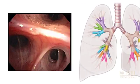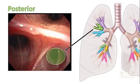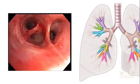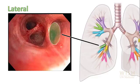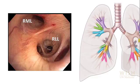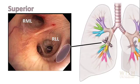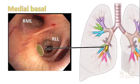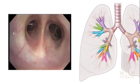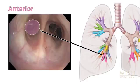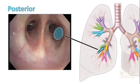The right lung has three lobes. The right upper lobe bronchus takes off laterally from the right main stem and has three segments: anterior, apical and posterior. The middle lobe divides into medial and lateral segments. At the level of the right middle lobe bronchus, the superior segment and medial basal segments are visible. Below this, the right lower lobe bronchus divides into the remaining segmental bronchi: anterior, lateral and posterior segments.